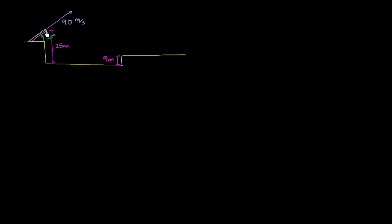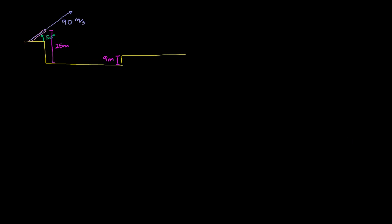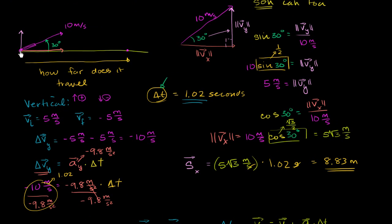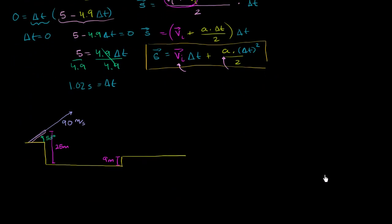So we're essentially launching this from a height of 25 meters. In the last video, we assumed it was being launched from an altitude of 0 and landing back at 0. Here, we're launching from 25 meters, and it will start decelerating in the vertical direction as soon as it leaves the muzzle. It's going to land at a different altitude. So how do we think about this problem?